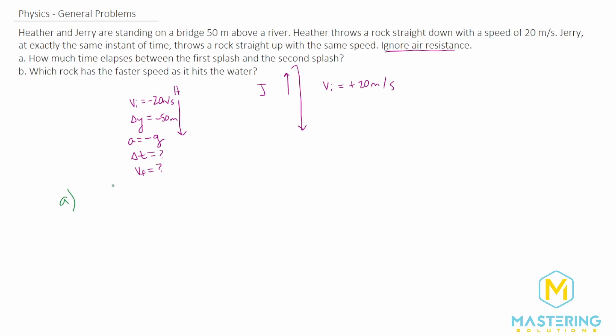In part A, we need to figure out the time for both of them. We're going to use the exact same equation for both, and it's y final equals y initial plus initial velocity times the time, plus one half times the acceleration times the time squared. We're going to say that down here where the water is, that is y equals zero. So where they're starting is y equals 50. So let me change this to a positive 50.